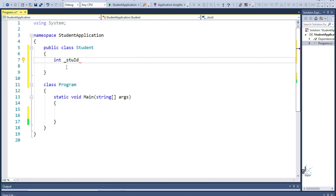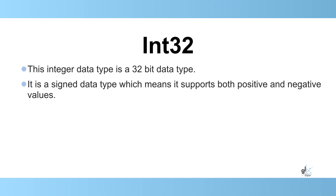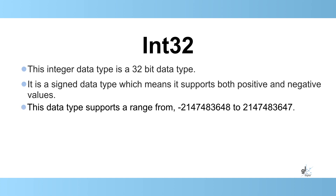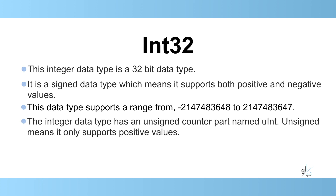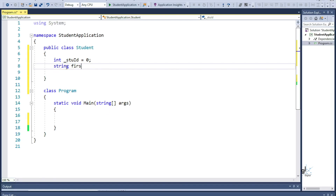StuID is defined as an integer. An integer is a 32-bit data type. It is a signed data type, which means it supports both negative and positive values. This data type supports a range from minus 2,147,483,648 to 2,147,483,647. The integer data type has an unsigned counterpart named uint. Unsigned means it only supports positive values. uint supports a range of positive whole number values from between 0 to 4,294,967,295. An integer is a value type.